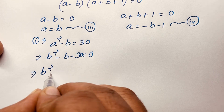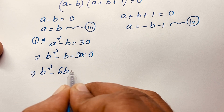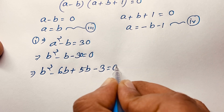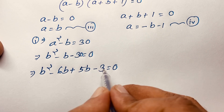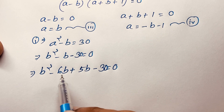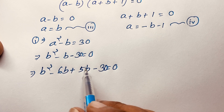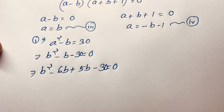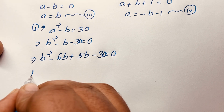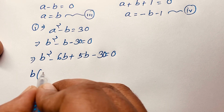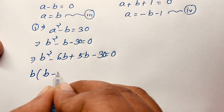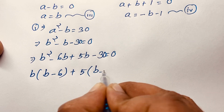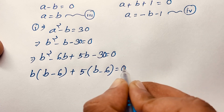So I can say it will be B squared minus 6B plus 5B minus 30 is equal to 0. Because negative 6B plus 5B will be negative B, and 6 times 5 will be 30. Now I can say easily here B is common, so B squared divided by B is B and 6B divided by B is 6, and I take 5 as common, so B minus 6 is equal to 0.